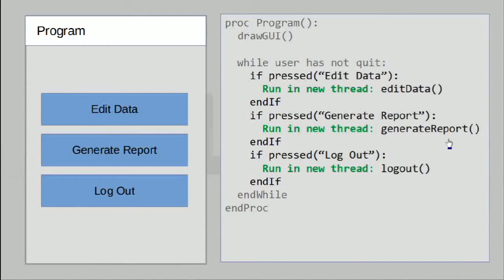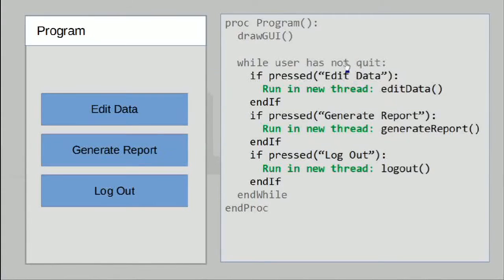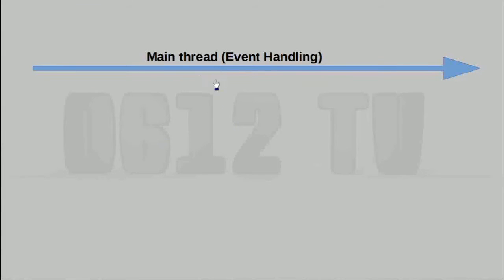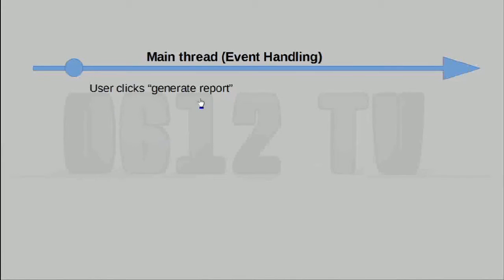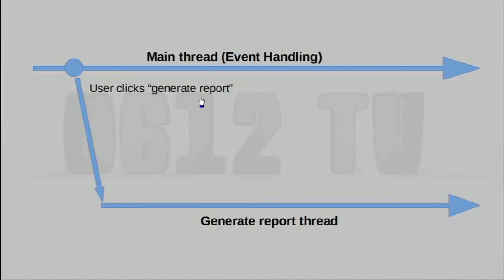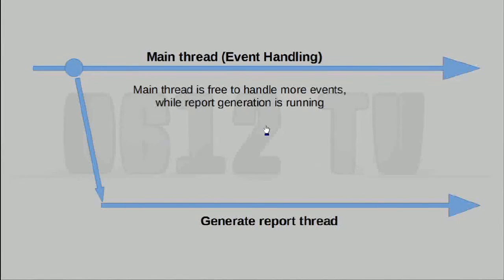We can picture this with a simple diagram. We have our main thread — all it does is handle and dispatch events. It doesn't do the heavy lifting of actually responding to the event itself; it just creates a new thread and gets that new thread to do it. If the user clicks on generate reports, all it does is dispatch a new thread that generates the report, and the main thread can continue doing whatever it needs to do.